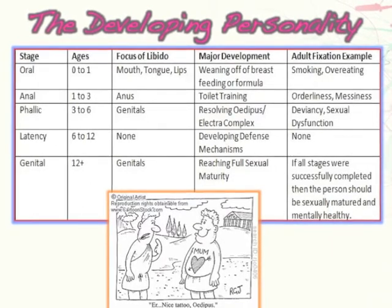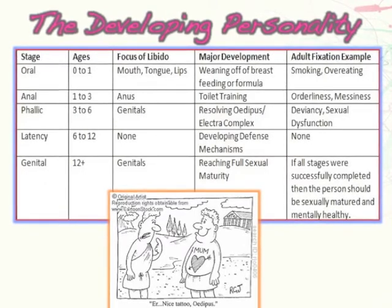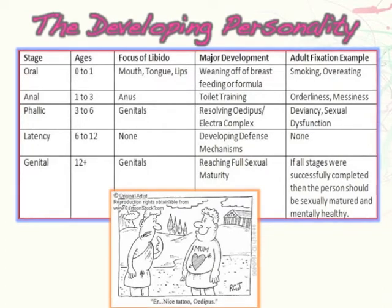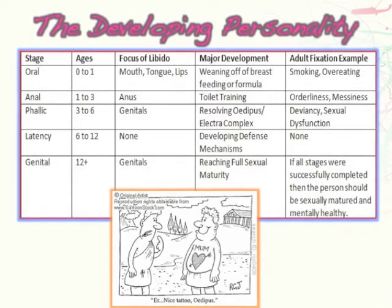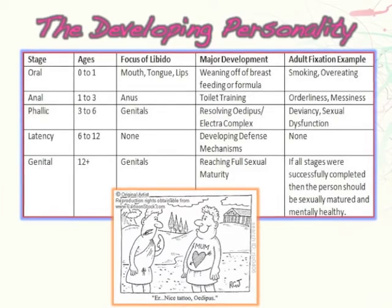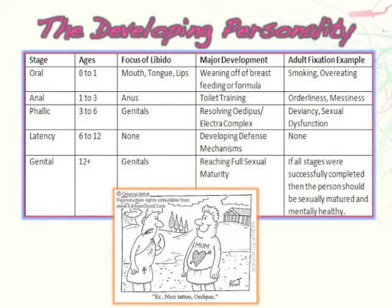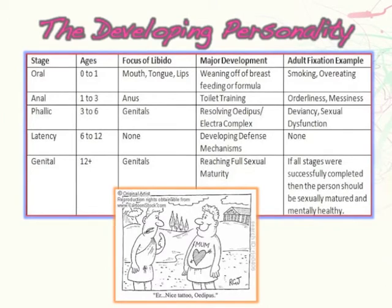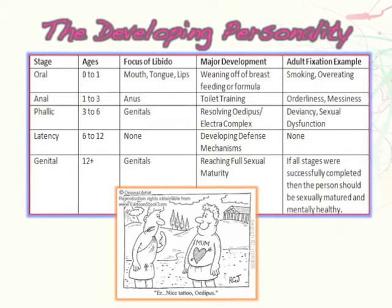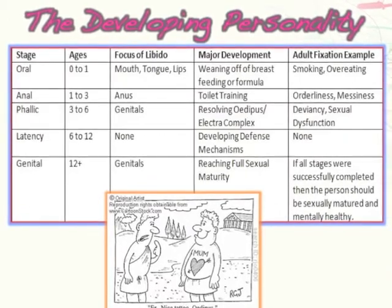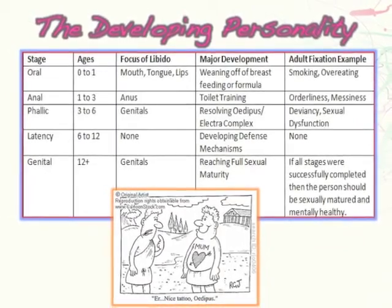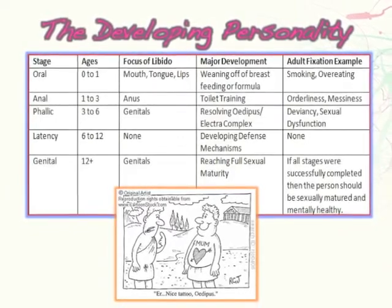Back to the oral stage: from ages 0 to 1, the focus of libido is the mouth, tongue, and lips. The major crisis, according to Freud, is to successfully wean the child off breastfeeding. If the child is breastfed for too long or not long enough, they can become orally fixated. As adults, they might smoke, overeat, bite their nails, or chew on pencils. In terms of personality, a person fixated in the oral stage may 'swallow anything' — meaning they're gullible — or have a 'biting wit,' meaning they're sarcastic. If breastfed for the right amount of time, they move on with no quirks.